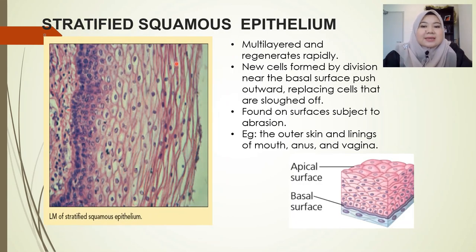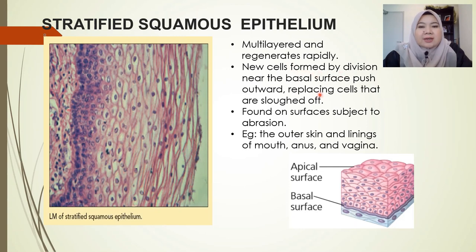The next one is stratified squamous epithelium. Stratified means multiple layers, so we have many layers of squamous epithelial cells. They are multi-layered and regenerate rapidly, meaning they undergo cell division quite frequently. The new cells are formed by division near the basal surface and are pushed outward to the apical surface to replace the dead cells that are sloughed off.